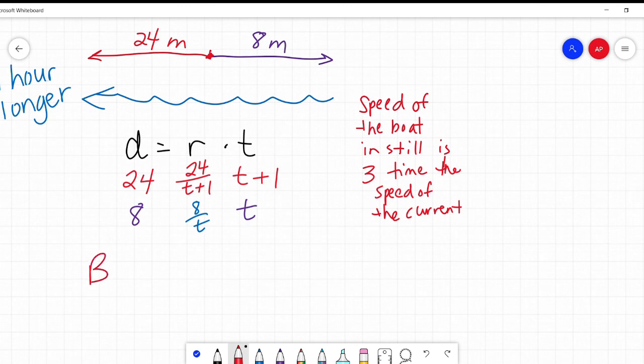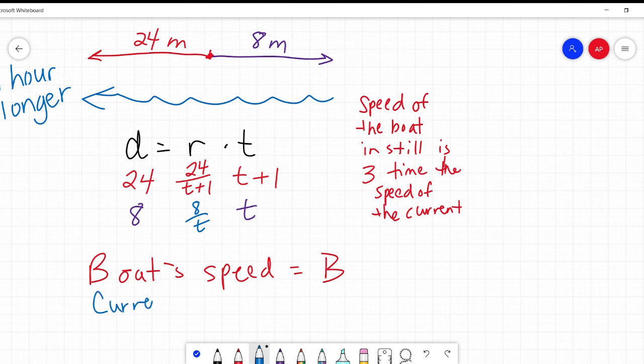So on top, it's 24 divided by T plus one. And on the bottom, it's eight divided by T. It's the same thing as if I said, I drove 50 miles and it took me two hours. How fast was I going? You would say, oh, 50 miles and it took you two hours, you were going 25 miles per hour. It's the same thing we're doing. I'm just using variables.